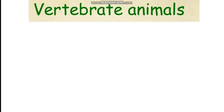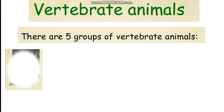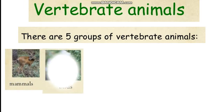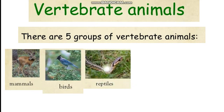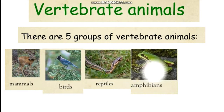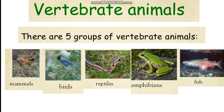There are five groups of vertebrate animals: Mammals, Birds, Reptiles, Amphibians, and Fish.